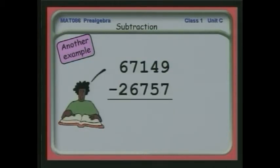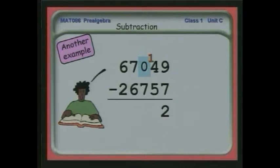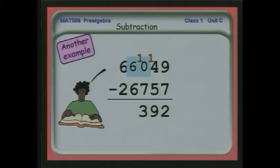Let's look at another example. Nine minus seven is easy, but four minus five is a problem. We borrow one from the hundreds column — the hundreds goes down by one — but now we have 14 minus 5, which is 9. However, now in the hundreds column we have 0 minus 7, another problem. So we borrow one from the thousands column to get 10 minus 7. That works: 6 minus 6 is 0, 6 minus 2 is 4, and we've solved the problem.